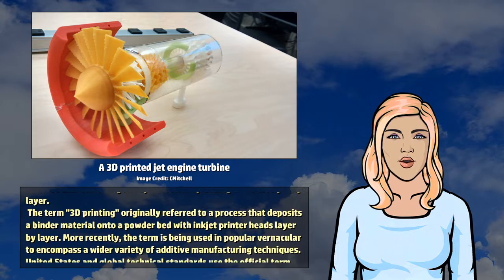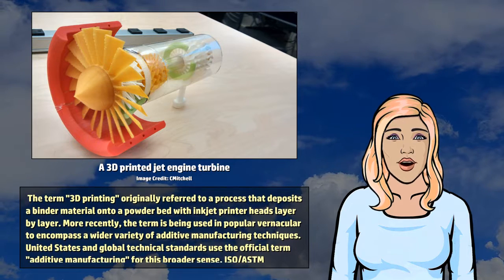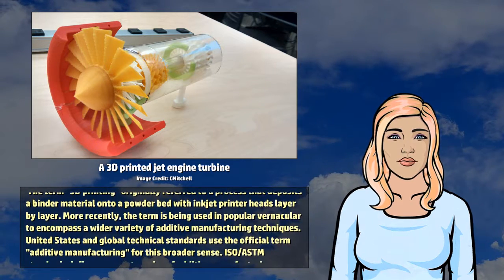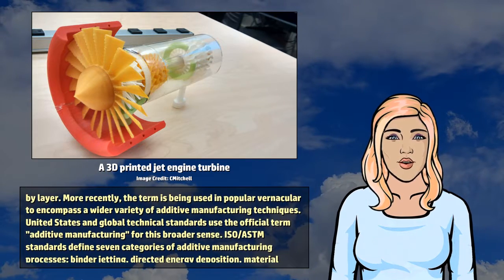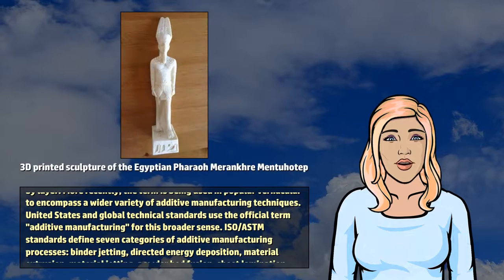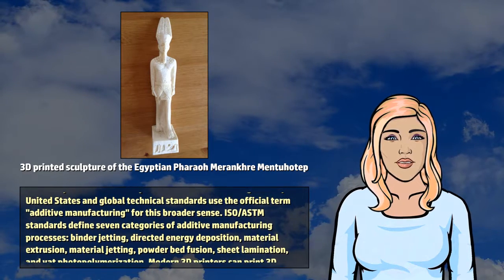More recently, the term is being used in popular vernacular to encompass a wider variety of additive manufacturing techniques. United States and global technical standards use the official term additive manufacturing for this broader sense. ISO/ASTM standards define seven categories of additive manufacturing processes: